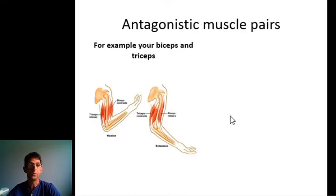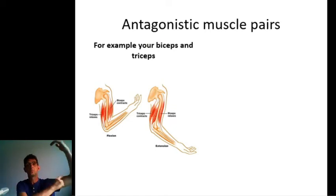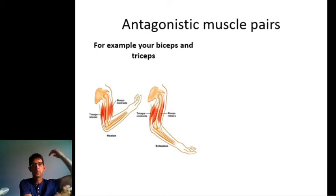Antagonistic muscle pairs — for example, your biceps and your triceps in your upper arm. Biceps and triceps.